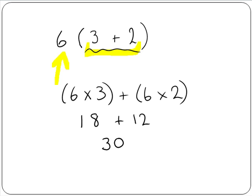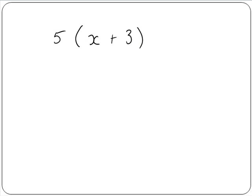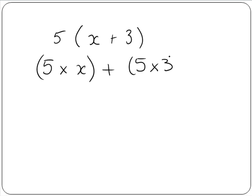But in the next example, we have a variable inside the brackets. So we have x, and we can't add x and 3 because they are not like terms. So in this case, we do it like we did the first example — we multiply 5 by x, and then we multiply 5 by the 3. So here we get 5x plus 15. We can't simplify this anymore because we can't add unlike terms, so this is our final answer.